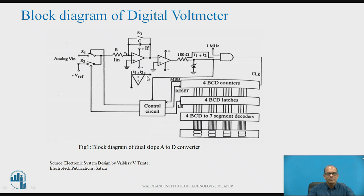With minus V-reference applied, the output of the integrator is now a positive-going ramp. This positive ramp continues up to 0. When the output of the integrator becomes slightly more than 0, the output of the comparator goes low, the AND gate is disabled, and the counter stops counting. The conversion cycle is complete.